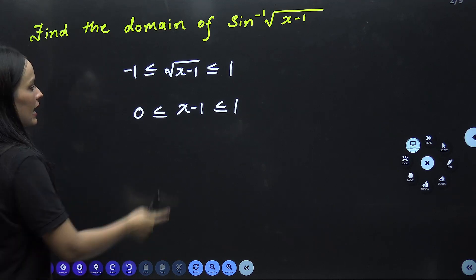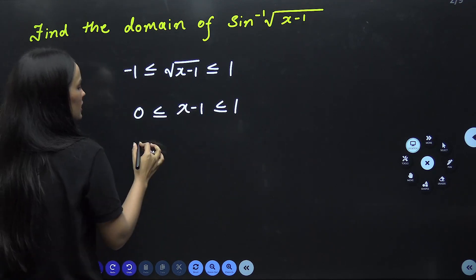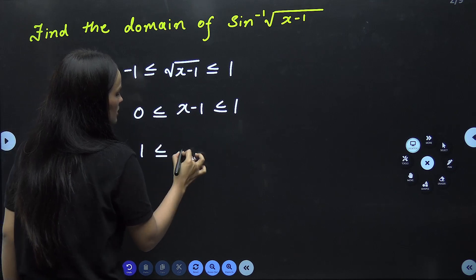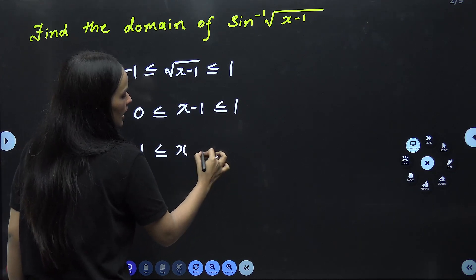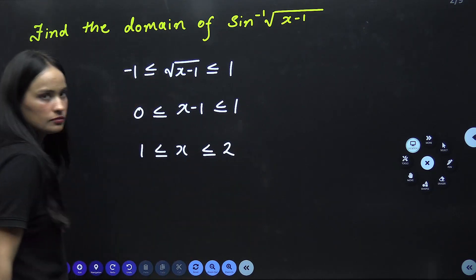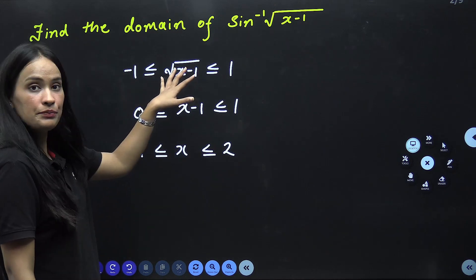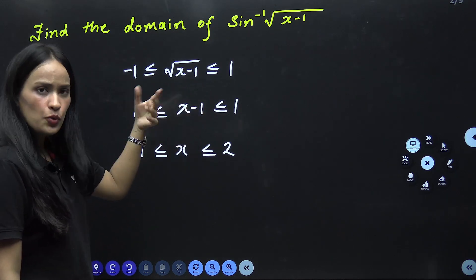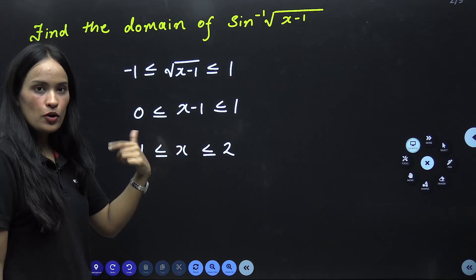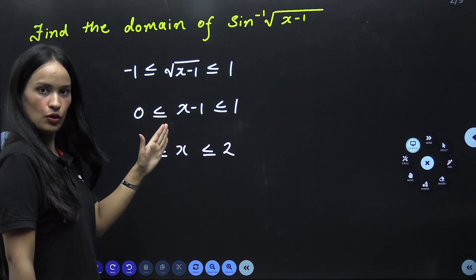After this, again you have to make x single. So what will it be? If you have to make x single, then what will it be? Entire inequality plus 1. So this will be 1, this will be x minus 1 plus 1, and this will be 1 plus 1, which is 2. So this will be 1. First of all it was like this. Okay? Squaring to remove root. So you will not write it 1 to 1. You will write it positive. So what will it be? 0.